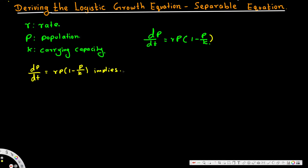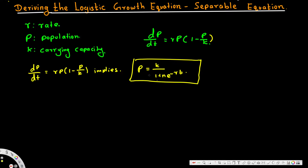What we want to derive is p is equal to k over (1 plus n·e^(negative rt)). This is the logistic growth equation — this is what we have to derive.